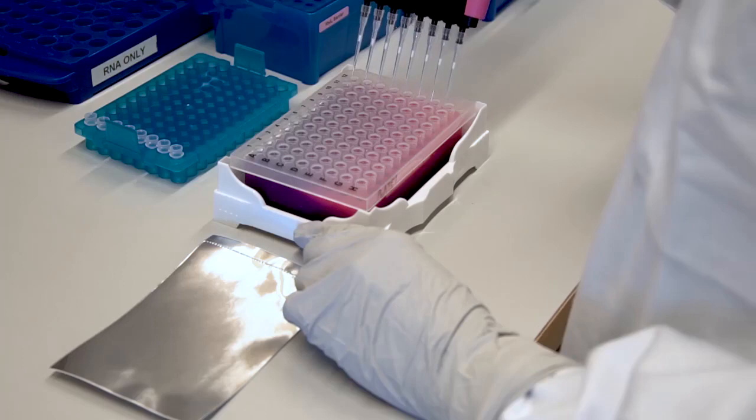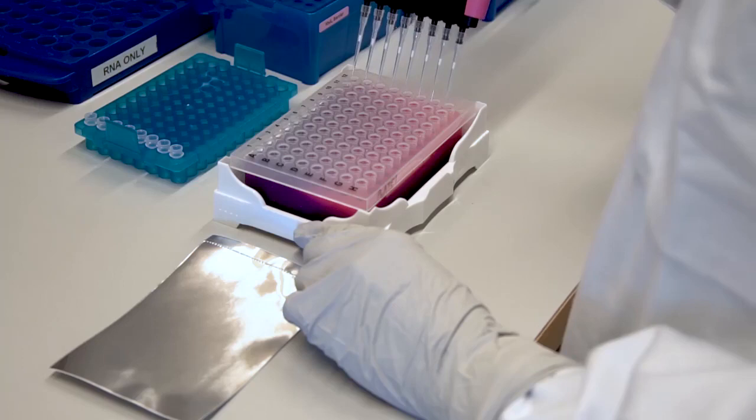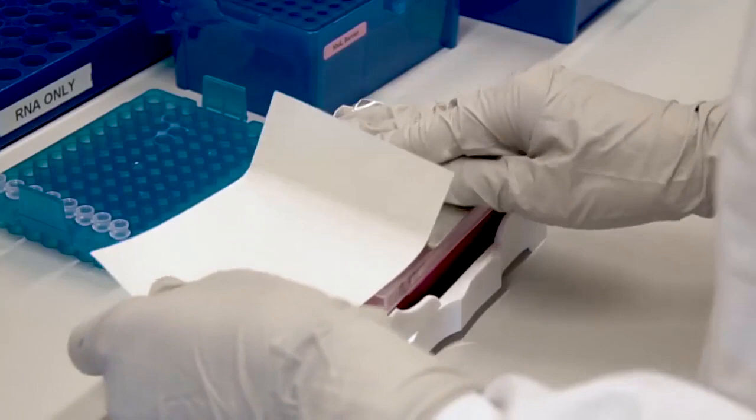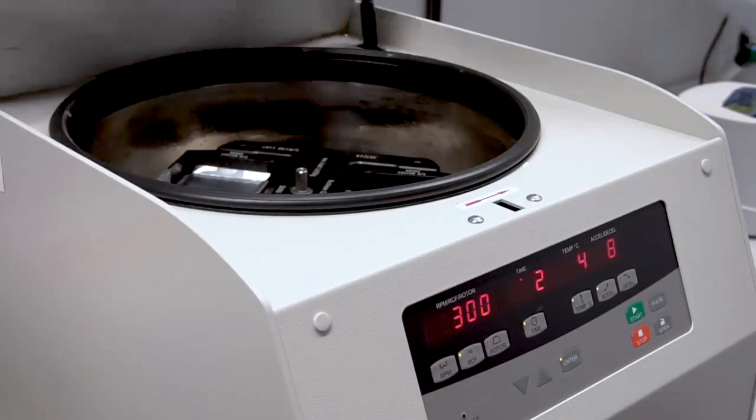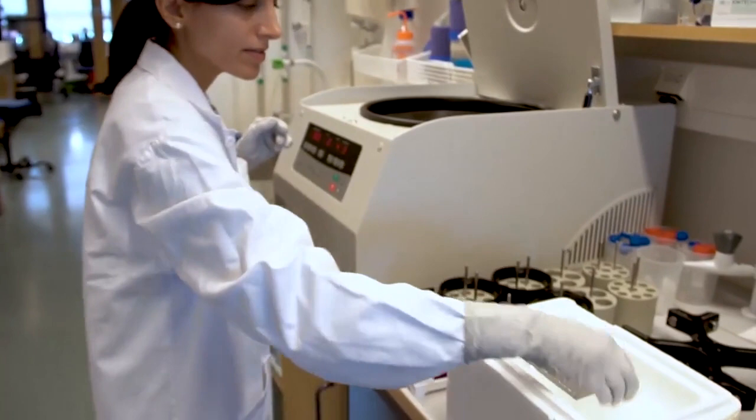Next, distribute 4 microliters of lysis buffer to each well of a 96-well PCR plate, and seal the plates with adhesive film. Spin down the plates to collect the liquid at the bottom. Keep the plates on ice until cell sorting for a maximum of 24 hours.